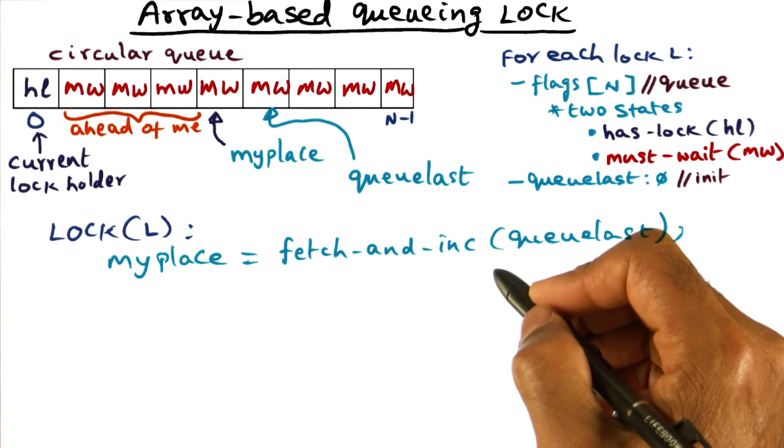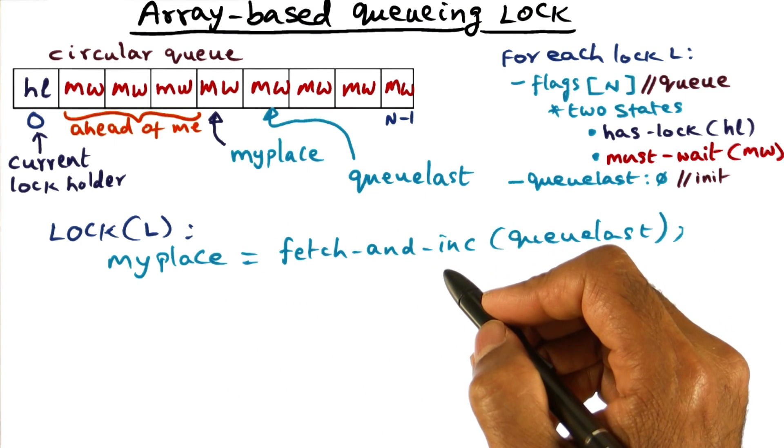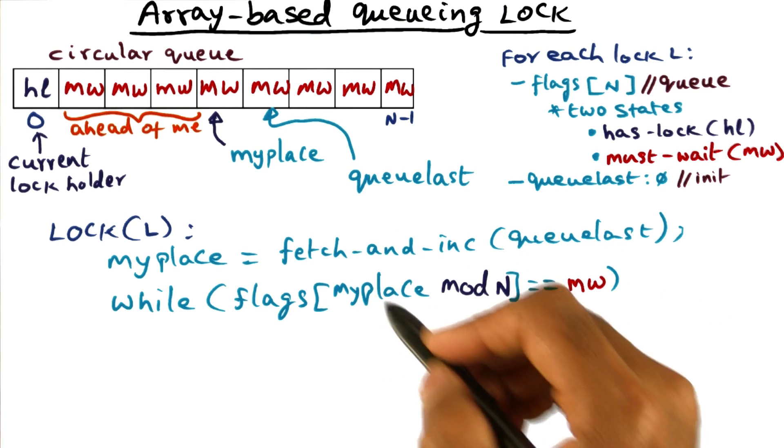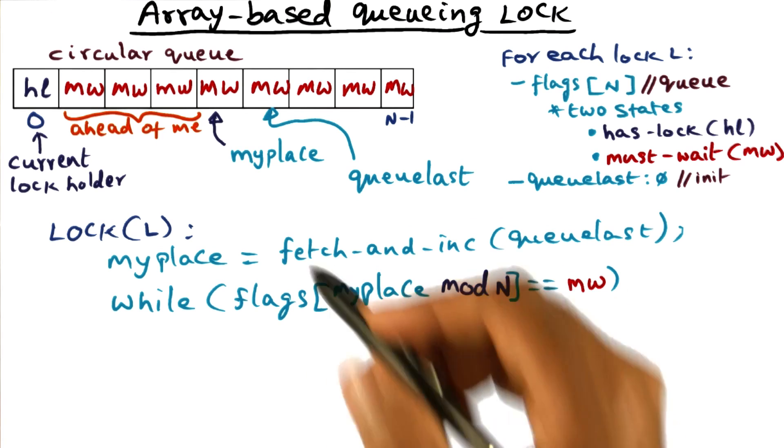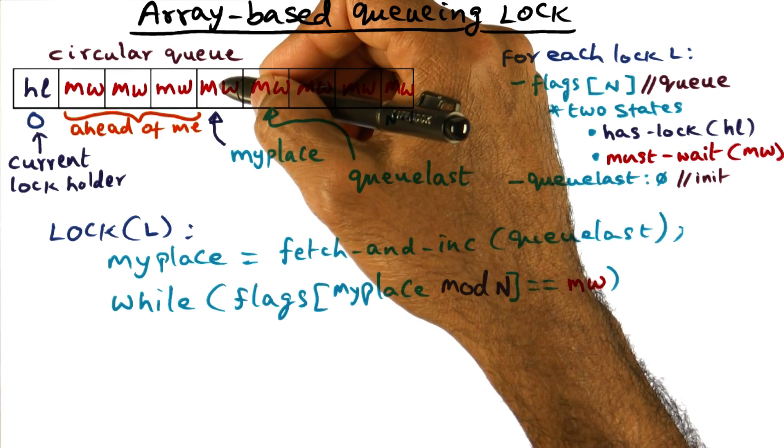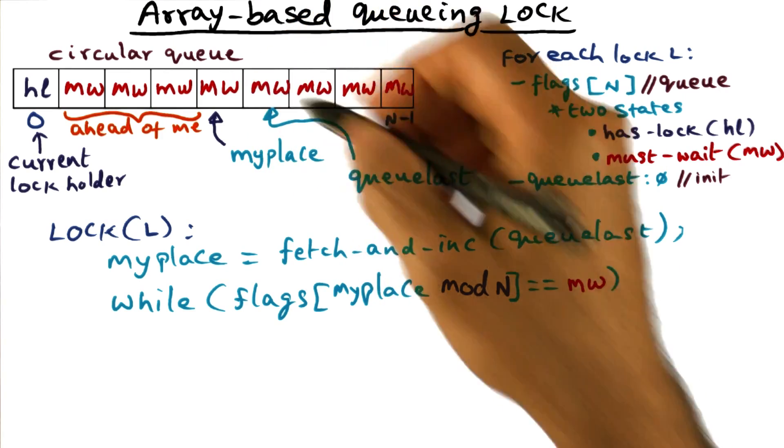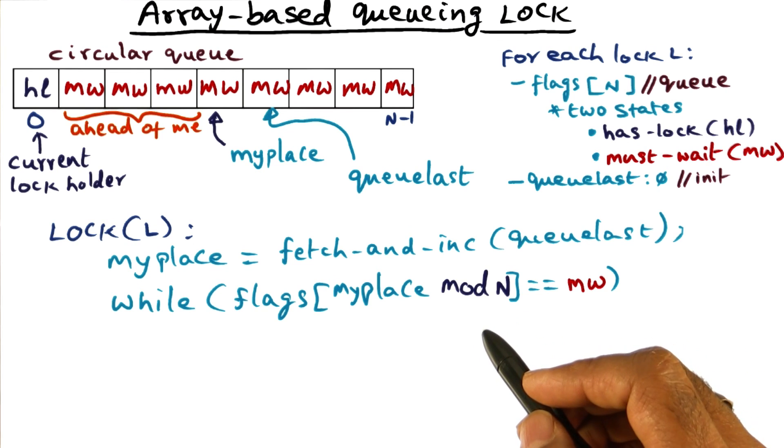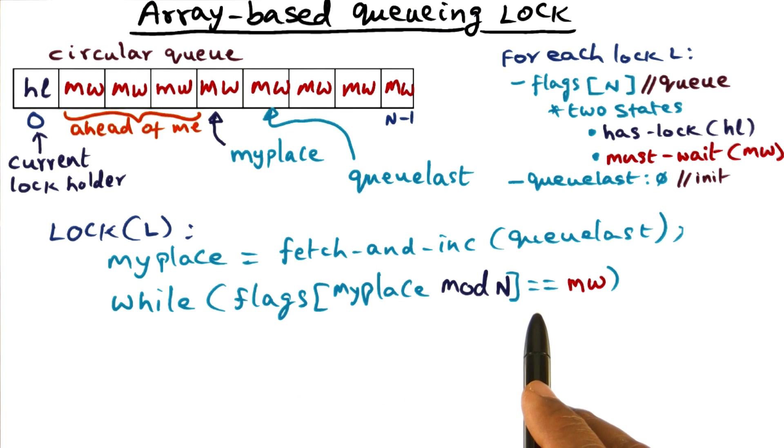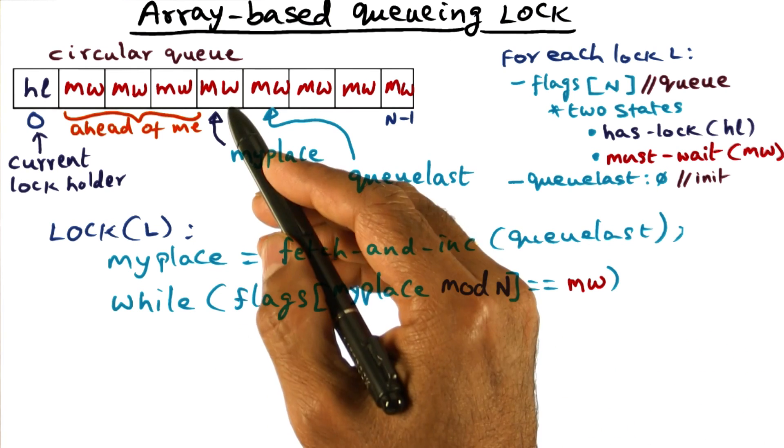So once I have marked my position in this flags array, then I'm going to basically wait for my turn. So what I do in order to wait is, I am basically waiting for this spot that I have marked myself. It is right now must wait. It has to change to HL. Once it changed to HL, I know that I have the lock and therefore, I'm going to do a spin on this particular location.